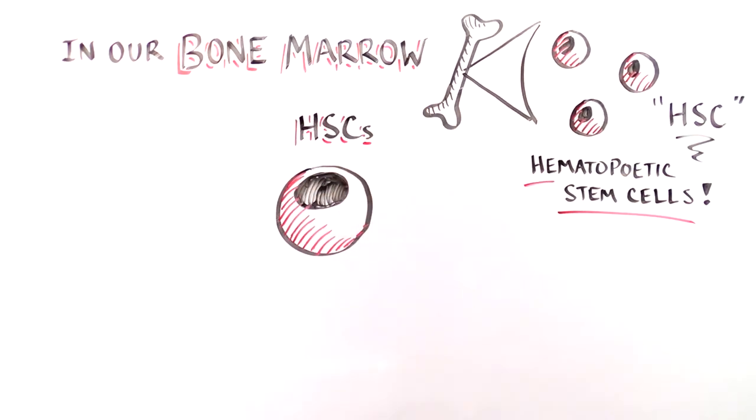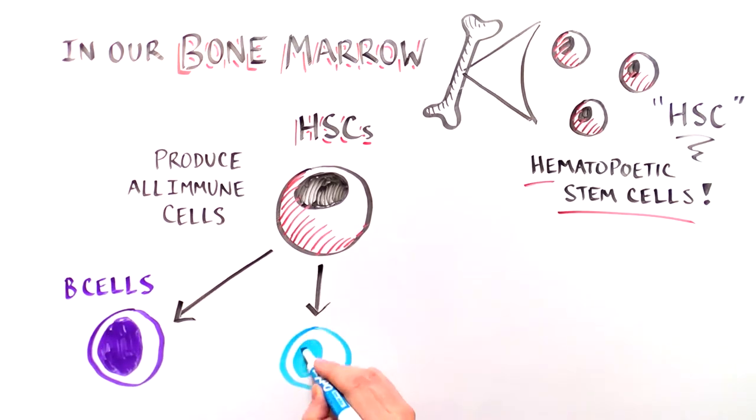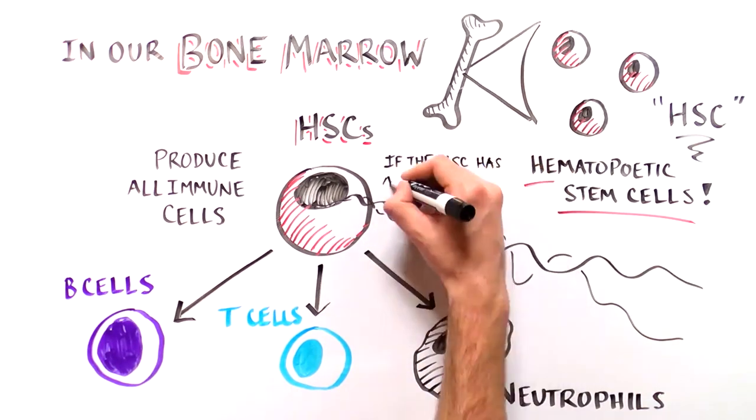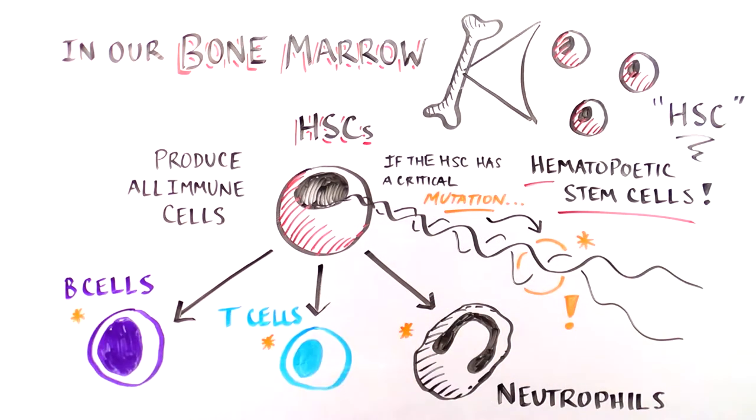These cells can produce all of the different types of immune cells. However, if the HSC has a mutation in a critical immune system gene, all of the immune cells it produces will be defective.